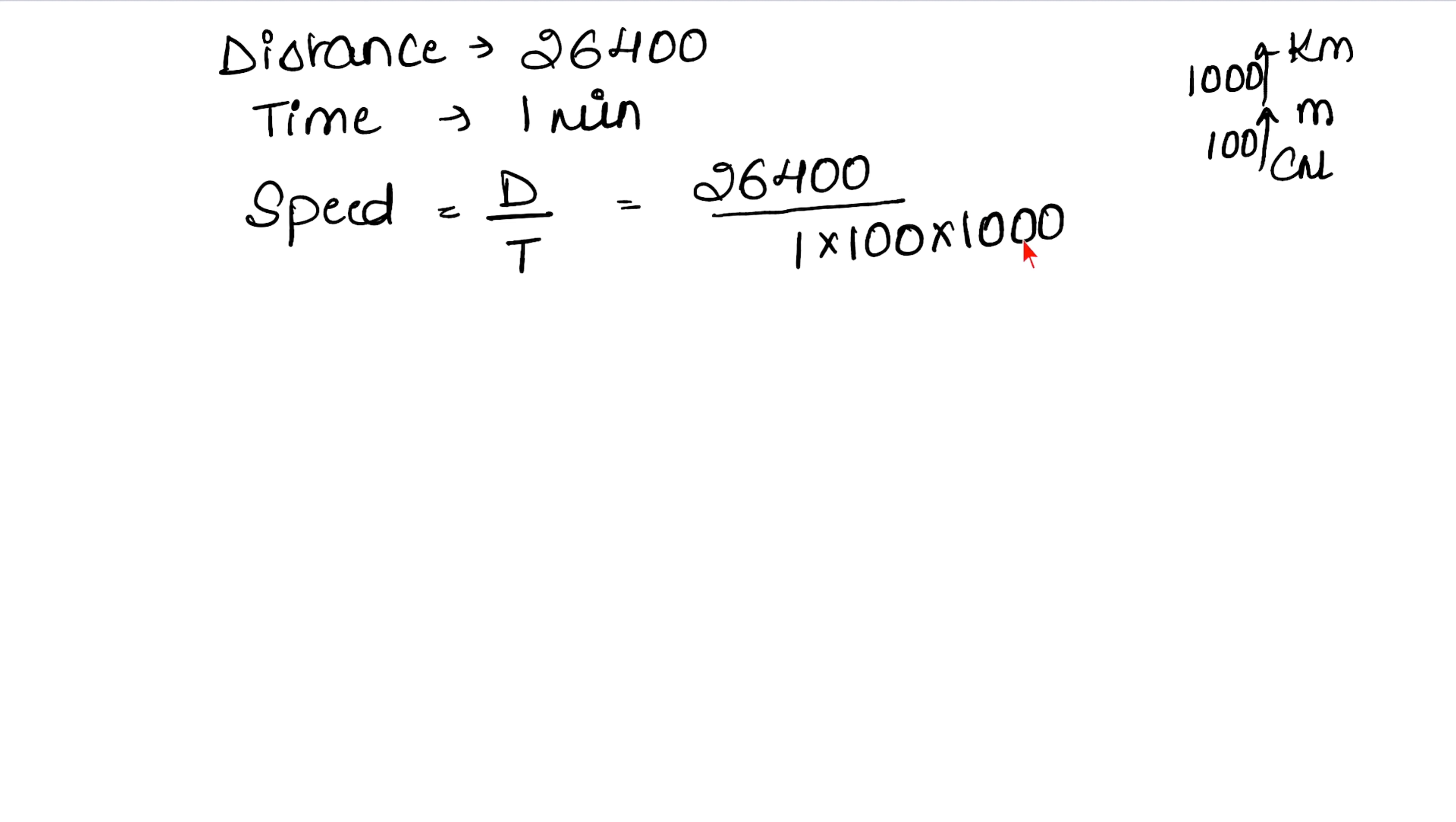Our distance is 26,400 and time is 1 minute. Speed formula is distance upon time, so distance 26,400 centimeters upon time 1 minute. Now we need to convert centimeters to kilometers: divide by 100 to get meters, then divide by 1000 to get kilometers.